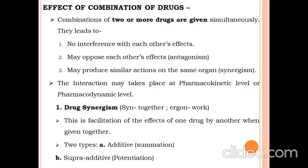Effects of combination of drugs. When two or more drugs are given simultaneously, they may lead to no interference with each other's effect, may oppose each other's effect — called antagonism — or may produce similar actions on the same organ, known as synergistic effect or synergism. These interactions may take place at the pharmacokinetic level or pharmacodynamic level.